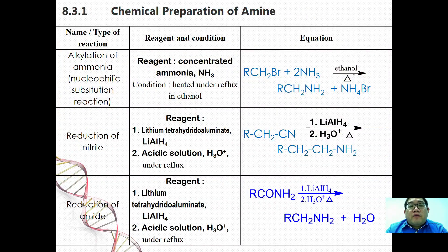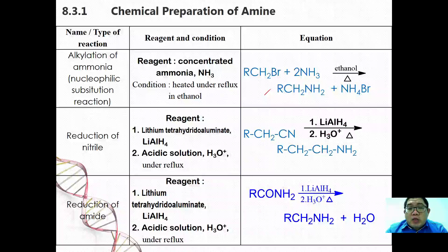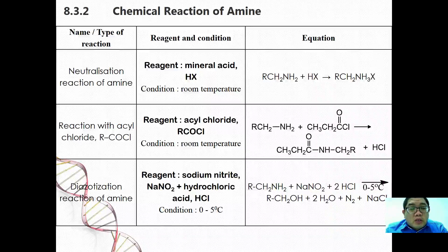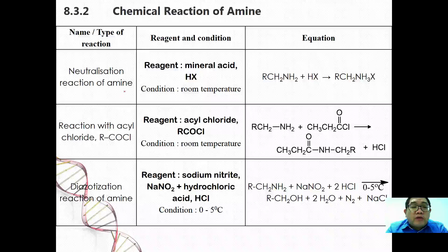These are the tables for the chemical reactions of amine. When you have amine and add it in ethanol under reflux, you form an amine salt. When you reduce a nitrile, you are able to form an amine, and when you reduce an amide, you are able to form amine too. These are the summaries of the chemical reactions of amine.